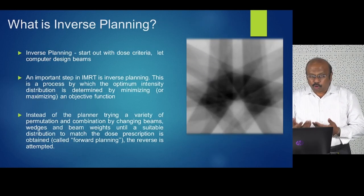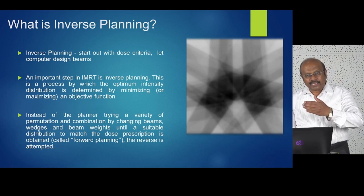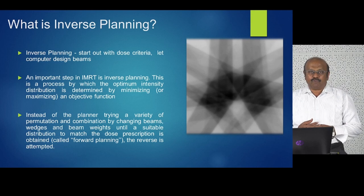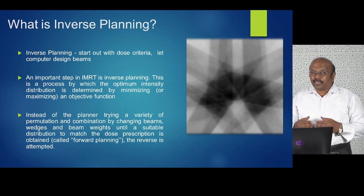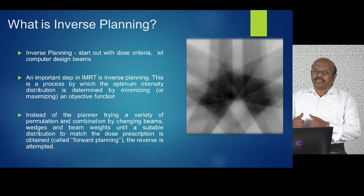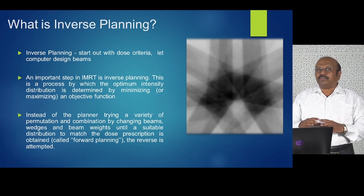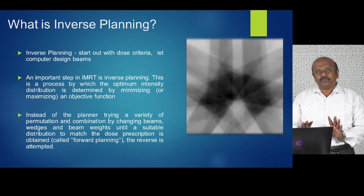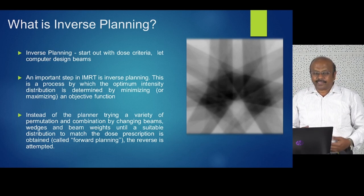What is inverse planning? Inverse planning is where you start with the dose criteria and let the computer design the beams. Normally you design the beam and work forward to the dose distribution. Here you say: this has to be the dose — what should be the beam, what should be the fluence? You work backwards like this.